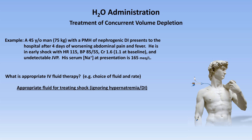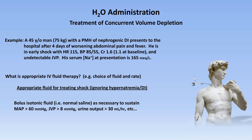Now let's consider what the appropriate fluid would be for treating his shock, ignoring the hypernatremia and DI. In this case, there's no rate calculation because patients in shock should be bolused isotonic fluid like normal saline as necessary to achieve a mean arterial pressure of at least 60, a JVP of at least 8 mmHg, and a urine output of 30 mL per hour. We don't put people on a continuous rate — we give fluid as necessary. A fairly typical amount might be 1 liter of normal saline bolus every 30 minutes for 4 liters until his volume was closer to normal, which would be essentially equivalent to 2,000 mL per hour, even though that's not how we would order it.